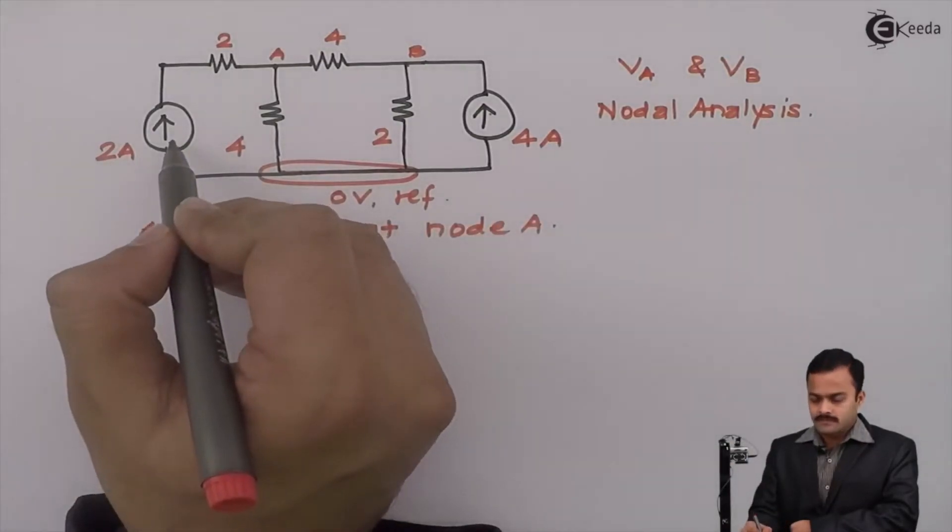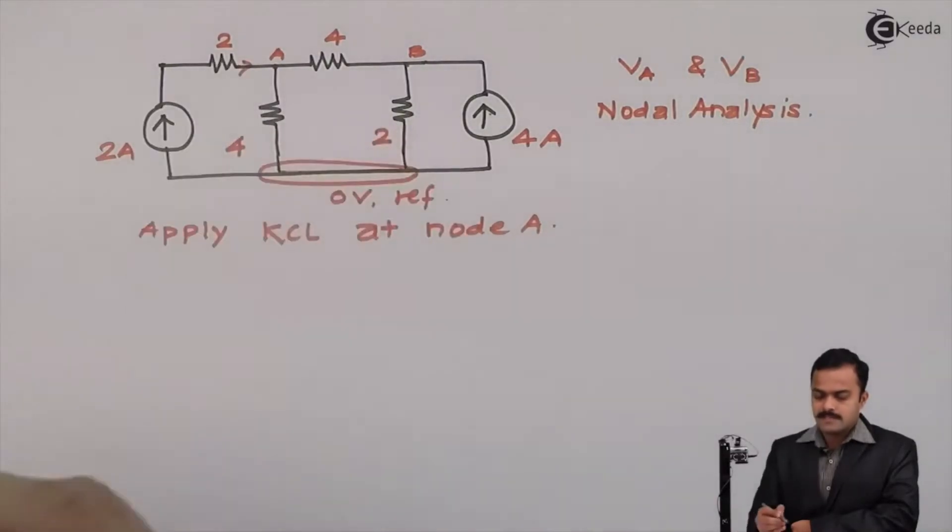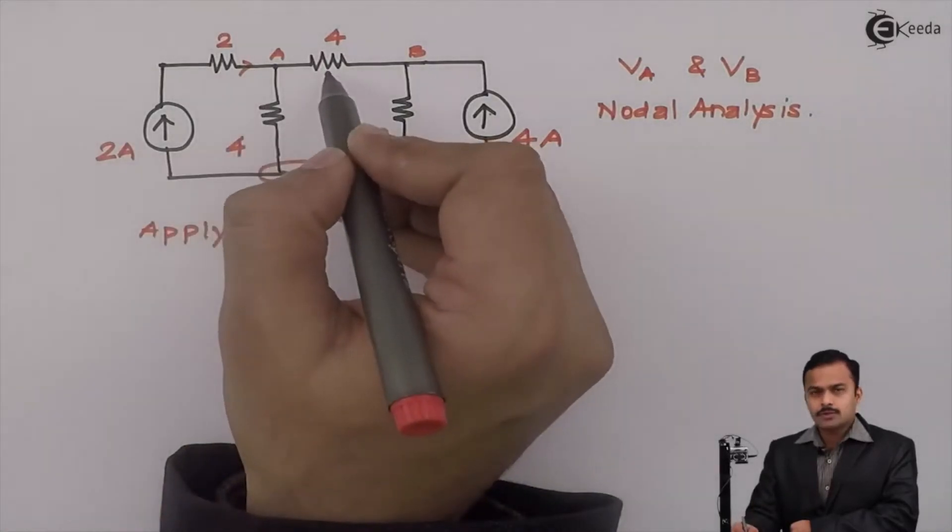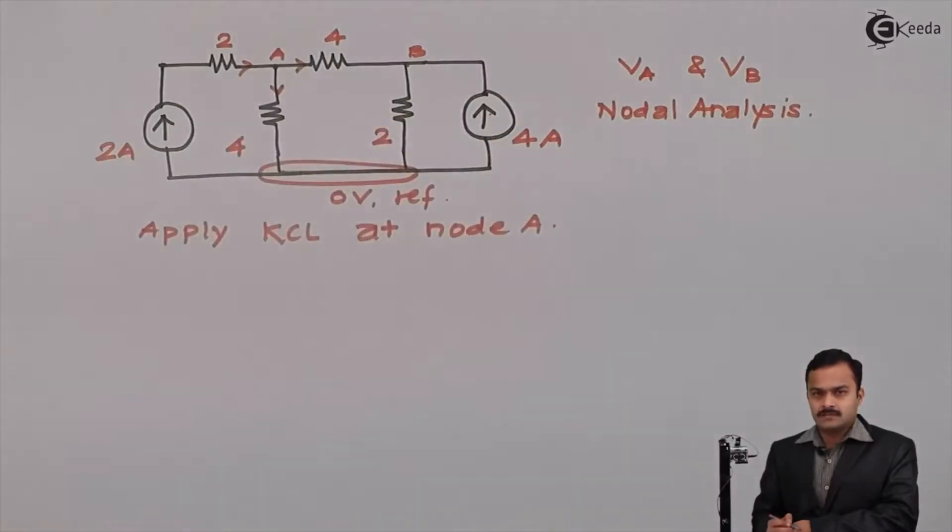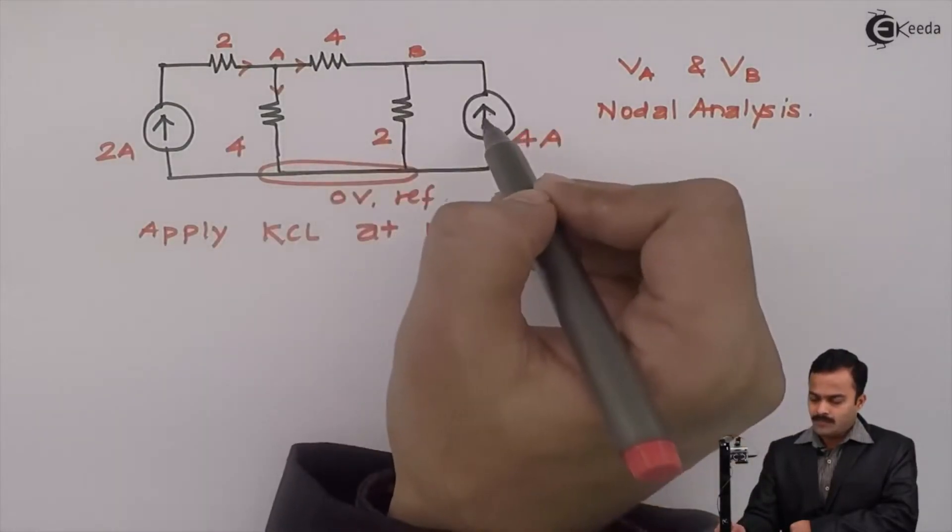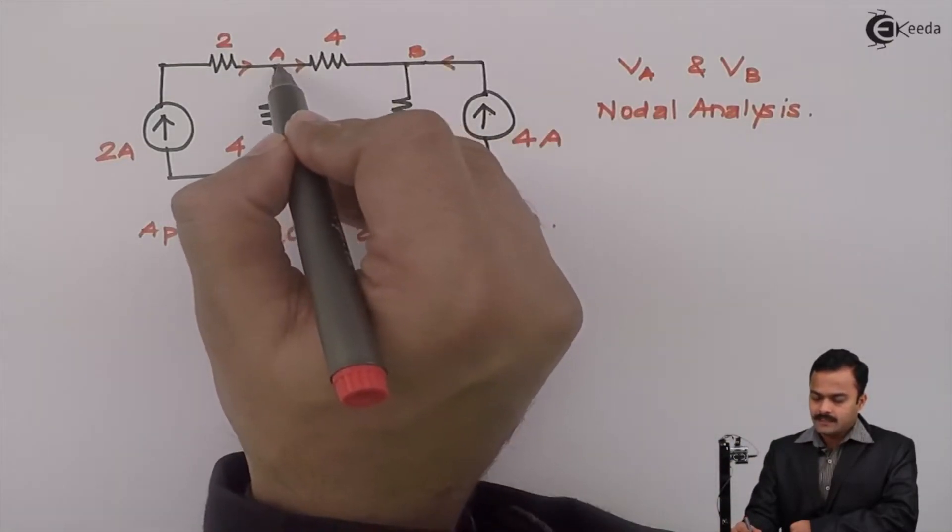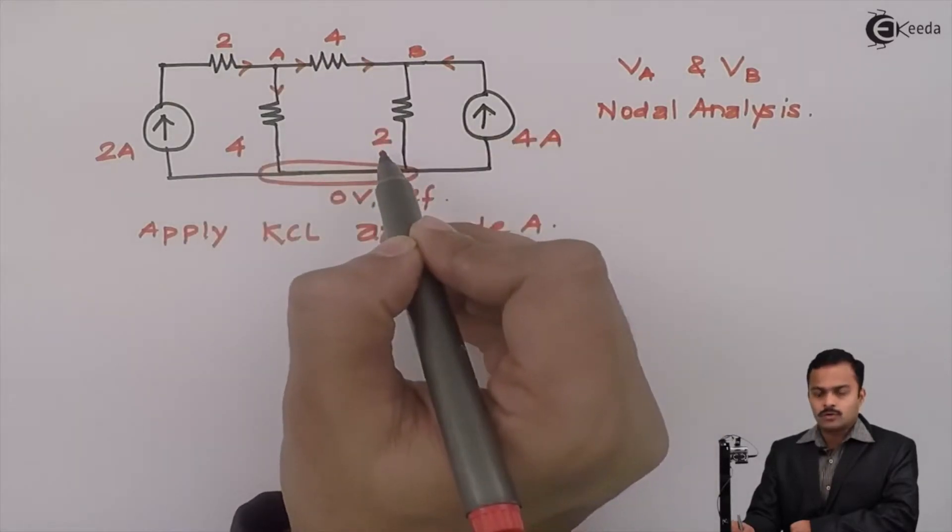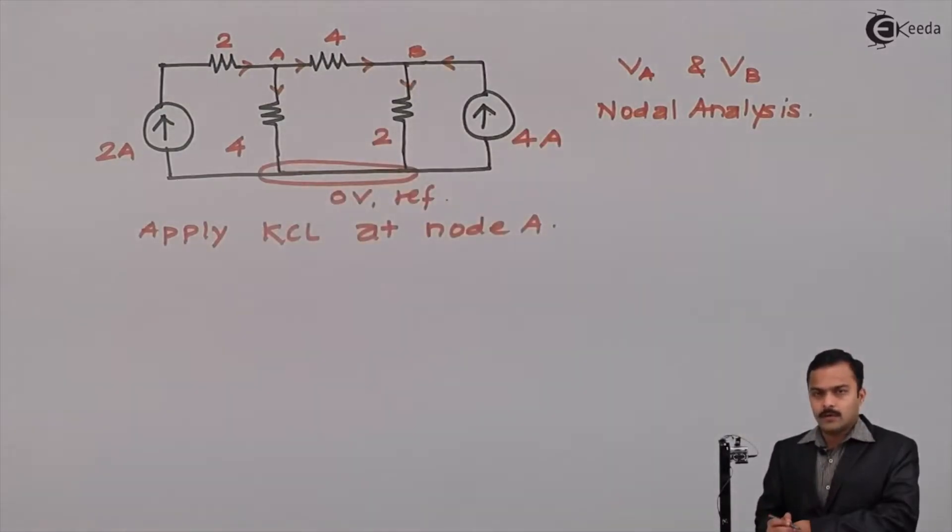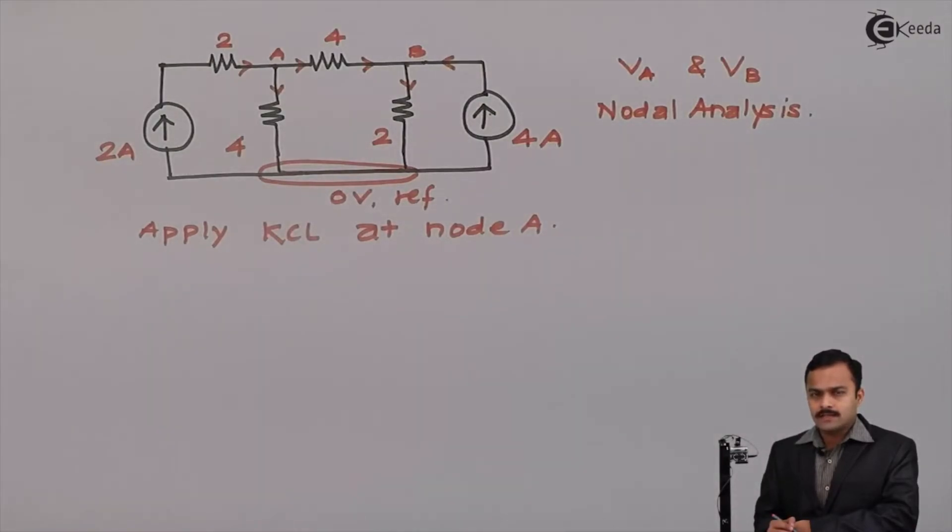This is a current source given and the direction of current is upward. So for this node it is incoming. Remaining 2 branches I mark random current direction. Again for node B this current is incoming because it is given. And I am considering the direction of current flowing through 4 ohm like this. And for 2 ohm I consider direction downwards. So after this step you have to make sure that each and every branch is having current direction.